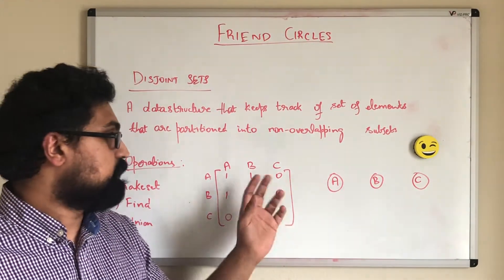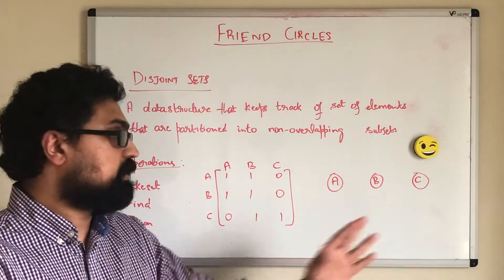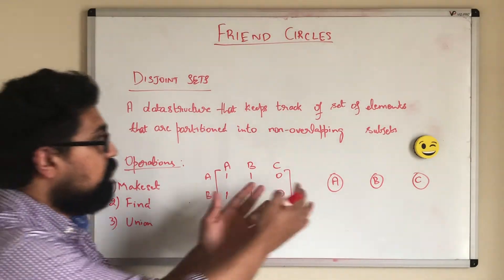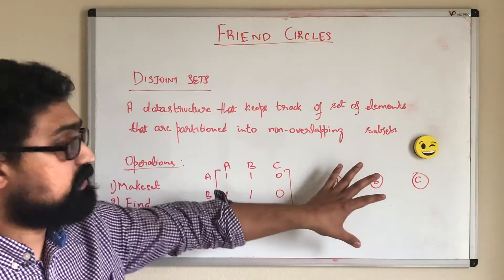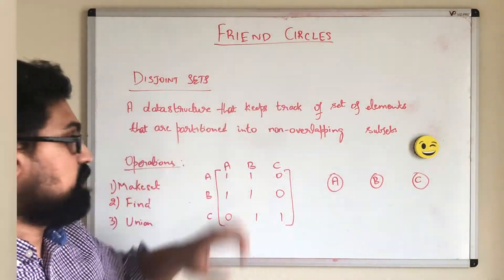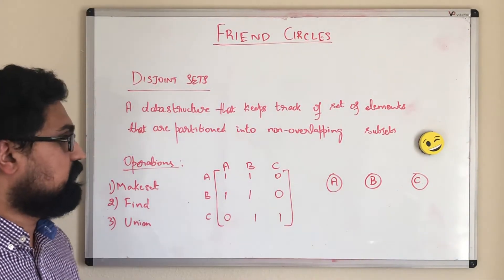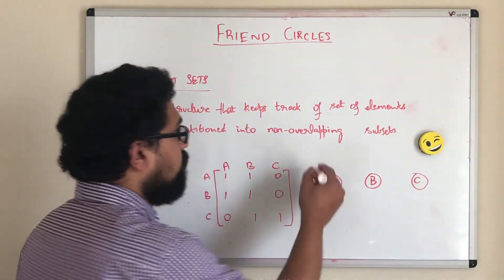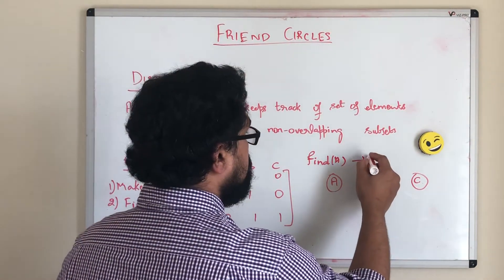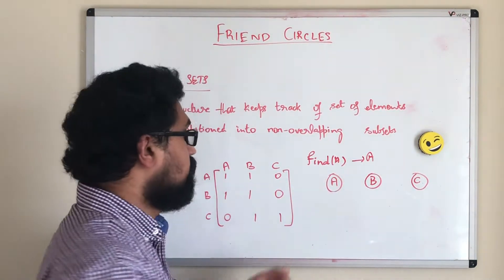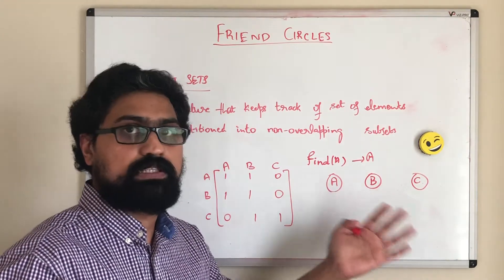When we call make set on B, we get a single set consisting of person B. Similarly, make set on C creates a single set consisting of person C. So all three are distinct disjoint sets, that is non-overlapping subsets — this is a disjoint set. A find operation on a particular set gives the representative of that set. So find of A will return the representative of A, which is A itself. Similarly, find of B gives representative B, and find of C gives representative C.